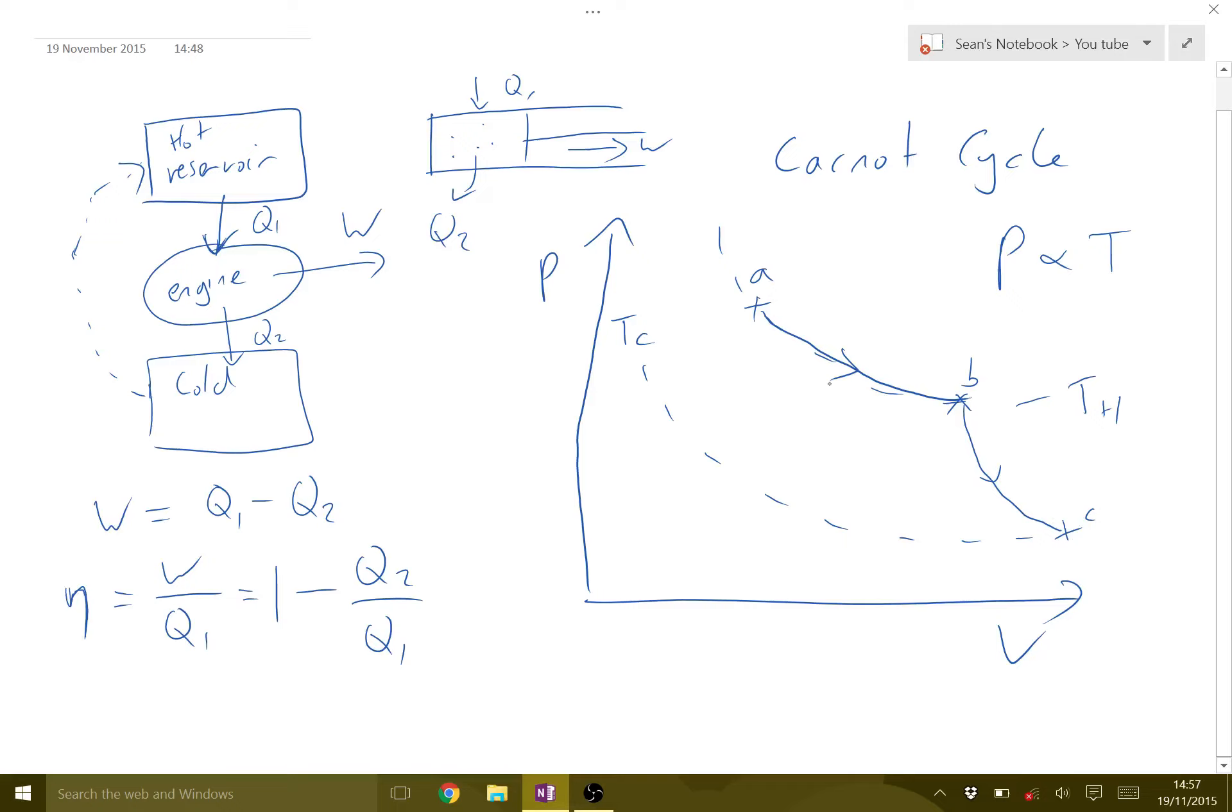So from A to B, we're having an expansion. So we're doing work. You could integrate under this curve, and you'd get the work done. But for this to be a cyclic process, we need to get back to A so we can do it again. So we end up having an isothermal compression from C to D.